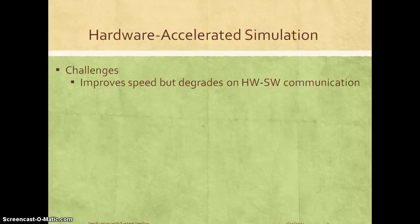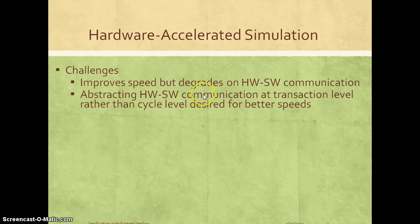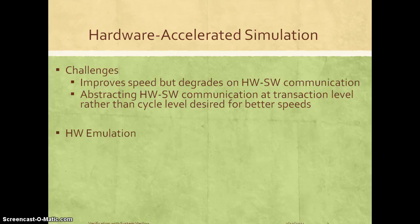This definitely comes with its own challenges. The speed can be improved since we move the hardware components onto a real hardware system like FPGA, but based on how the hardware-software communication is set up, it can still degrade your speed — especially if there is communication at every clock cycle or on every event change. The approach normally used is to abstract this hardware-software communication to a transaction level rather than a cycle or signal level. In that case, you don't need to communicate between hardware and software at every clock cycle; you only need to communicate at a transaction boundary.